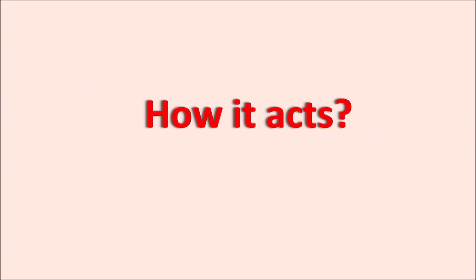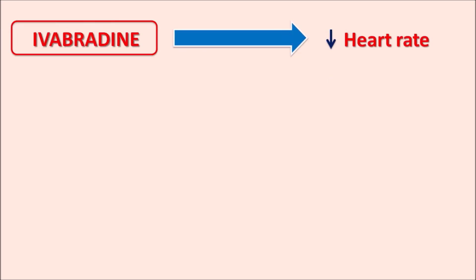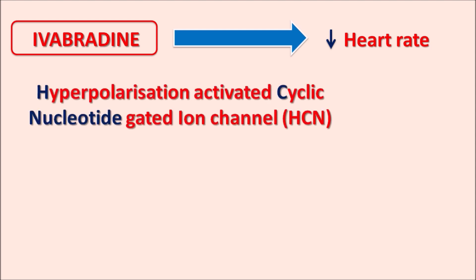Now let us see how this drug acts. Ivabradine reduces the heart rate, thereby reducing cardiac work and improving the symptoms of heart failure. All these actions are attributed to its action on hyperpolarization-activated cyclic nucleotide-gated (HCN) ion channels, also known as funny ion channels, because through the same ion channel two different ions — sodium and potassium — are permeable.